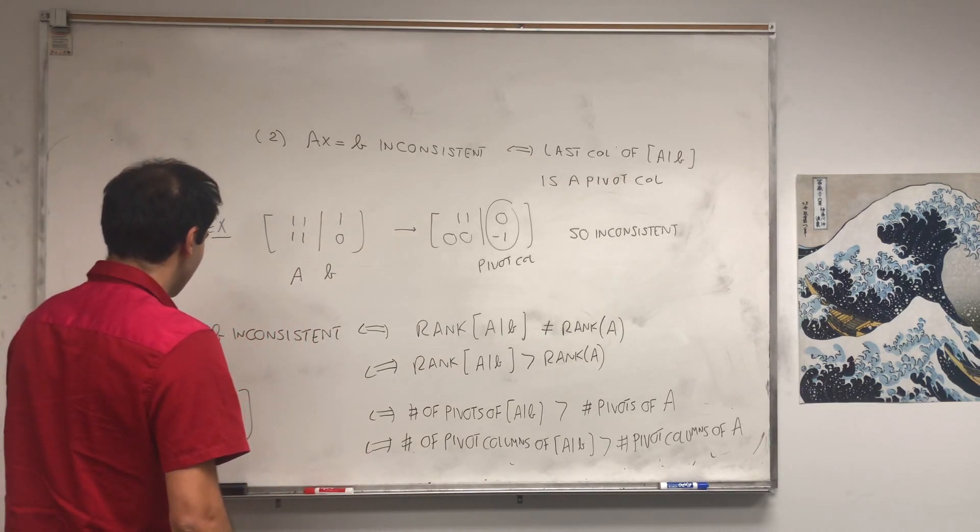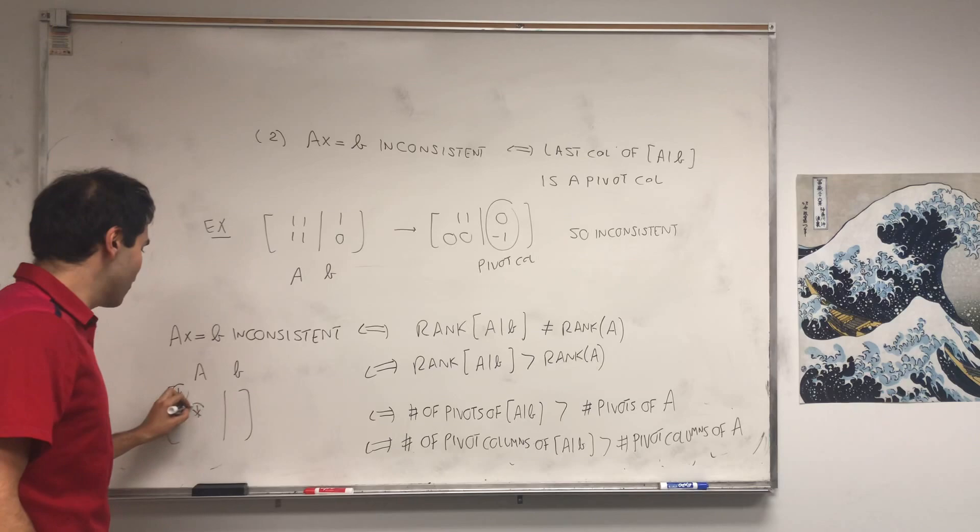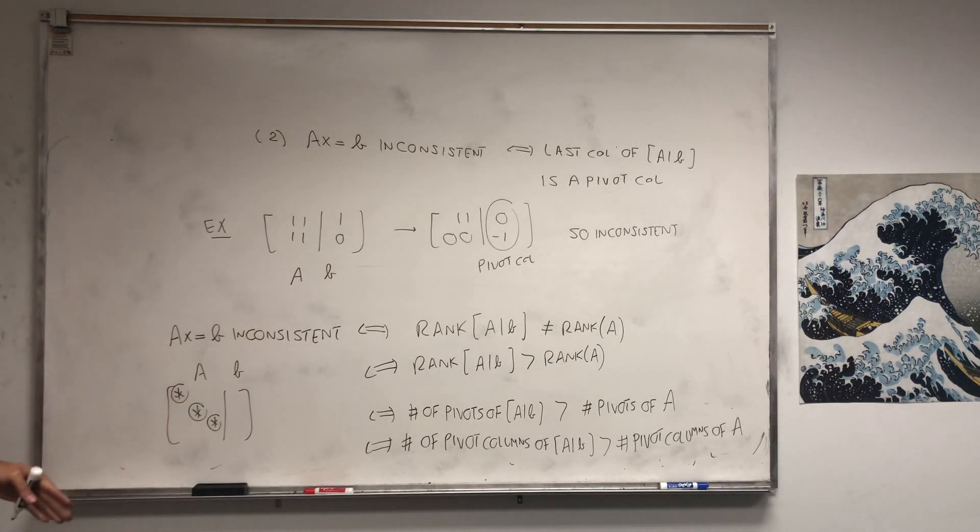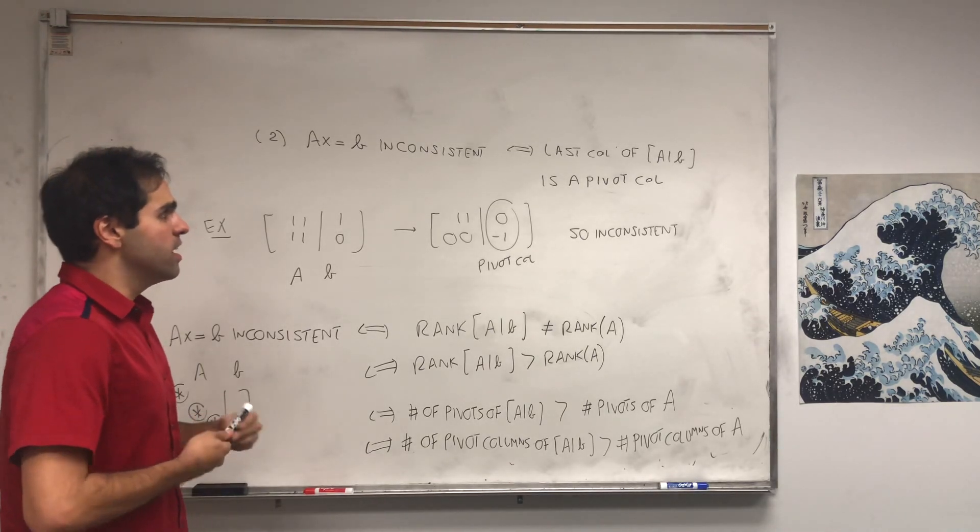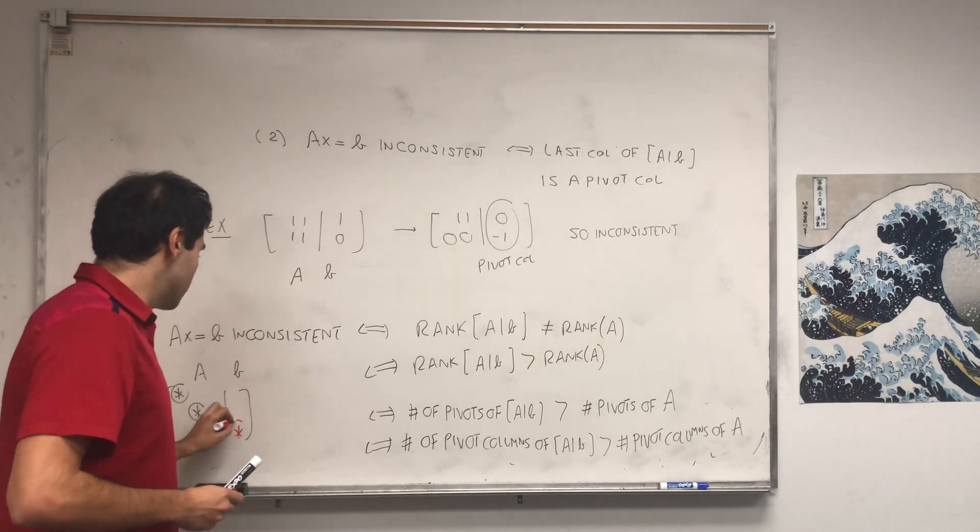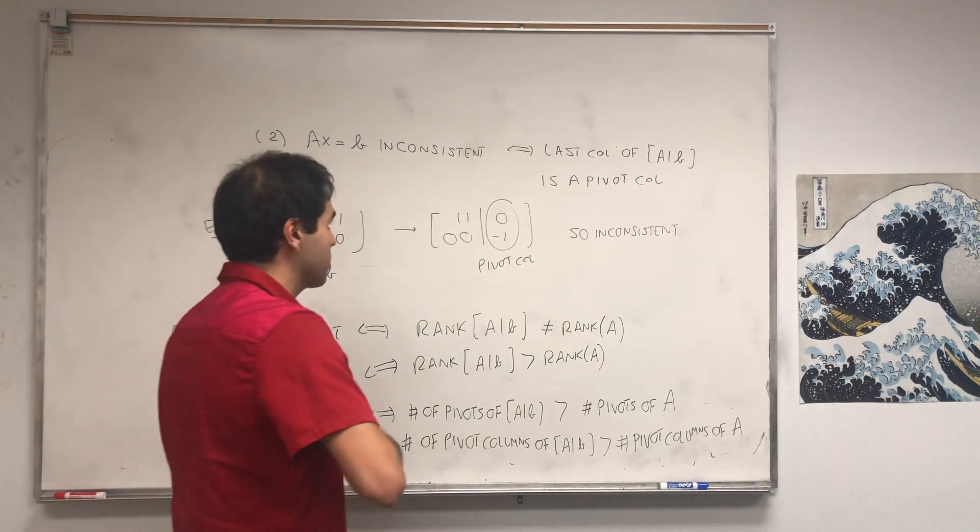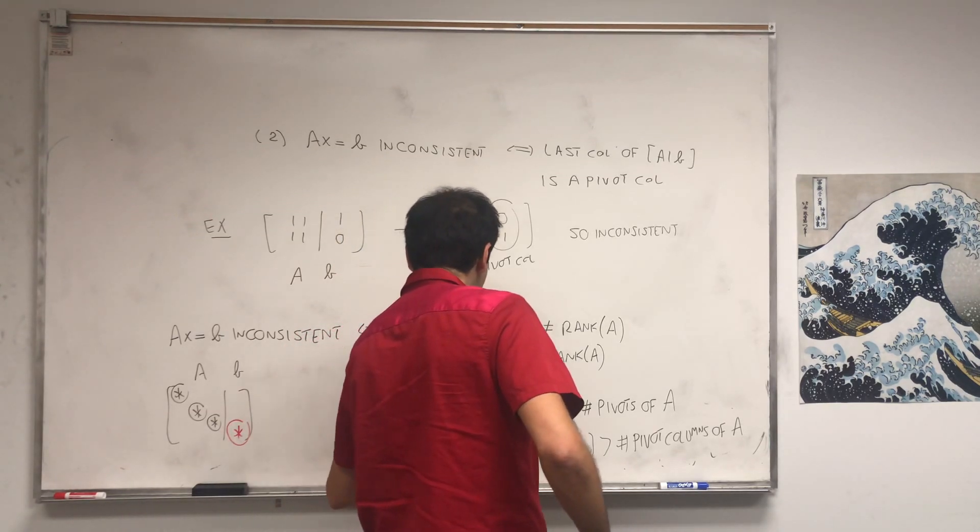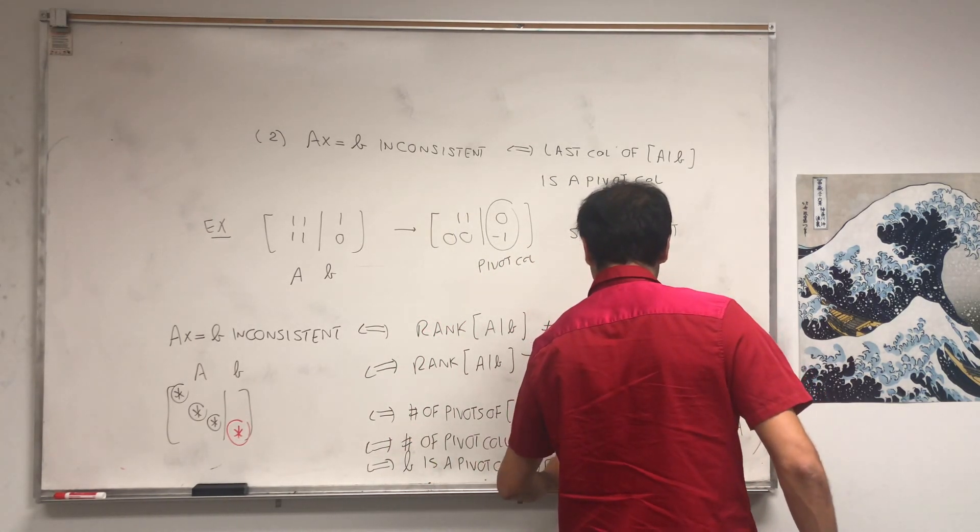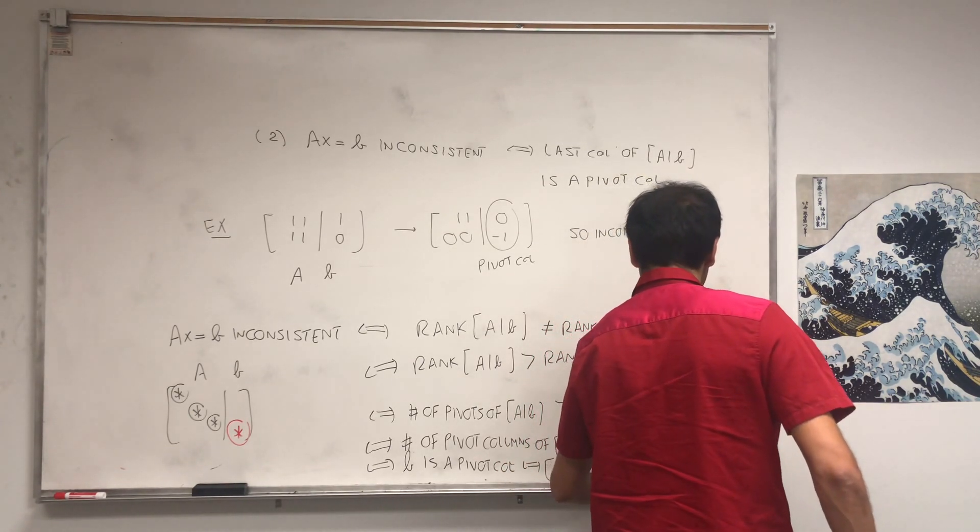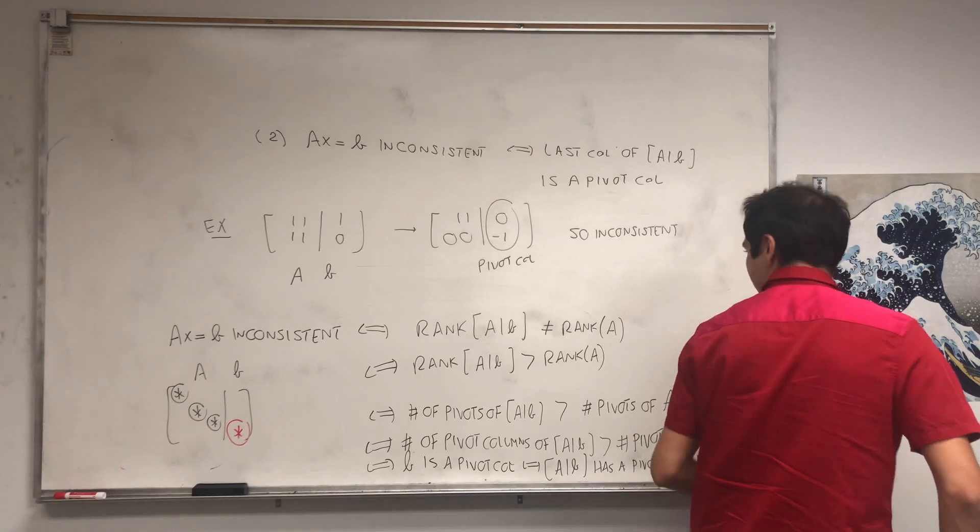But then look at [A|B]. So see, this is A and this is B. Well, the number of pivot columns of A is unchanged. So we have a fixed number of pivot columns in A. So the only way that the number of pivot columns of [A|B] is strictly bigger than the number of pivot columns of A is if the column of B, which is the last column of [A|B], it's a pivot column. So if and only if [A|B] is a pivot column. And it's equivalent, but by this I mean that the matrix [A|B] has a pivot in the last column.